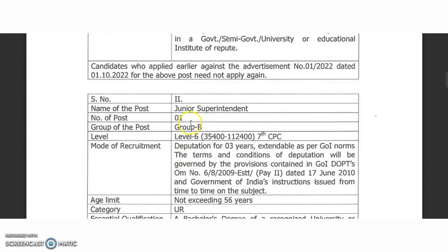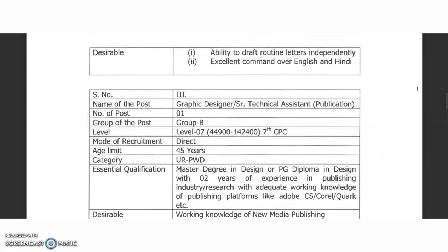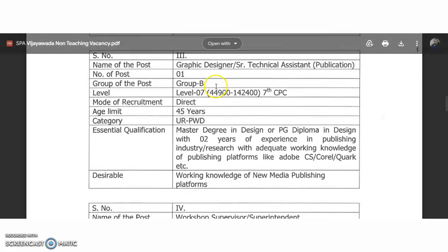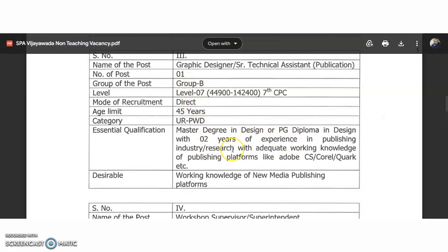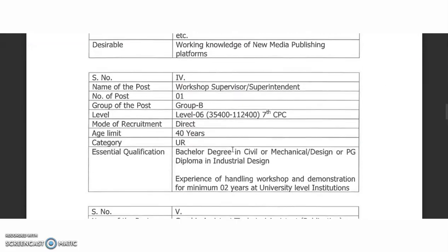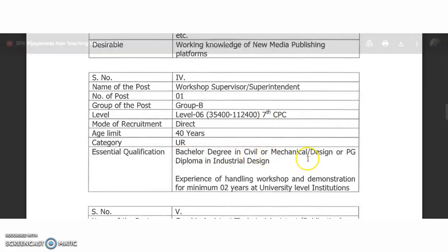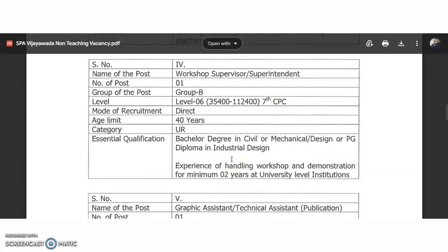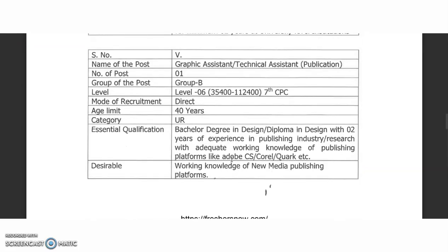The Junior Superintendent post — one post, Group B, Level 6 — is also on deputation basis. Next is Graphic Designer or Senior Technical Assistant — one post, Group B, Level 7 — requiring a Master's degree in Design or a PG diploma in Design with two years of experience. Work Supervisor or Superintendent requires a Bachelor's degree in Civil, Mechanical, or Design, or a PG diploma in Industrial Design with a minimum two years of experience.